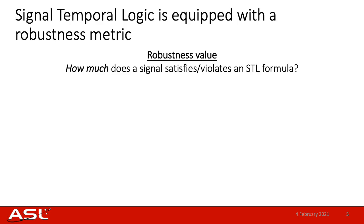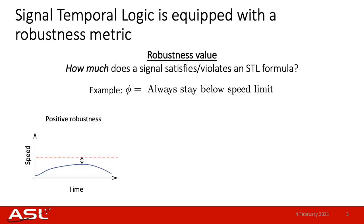What is really unique about STL is that it is equipped with the notion of robustness, which measures how much a signal satisfies or violates an STL formula. For example, we have an STL specification phi that says 'always stay below the speed limit.' For the speed profile on the bottom left, it is below the speed limit, so the robustness value will be positive. The magnitude of the robustness value corresponds to how much it is below the speed limit.